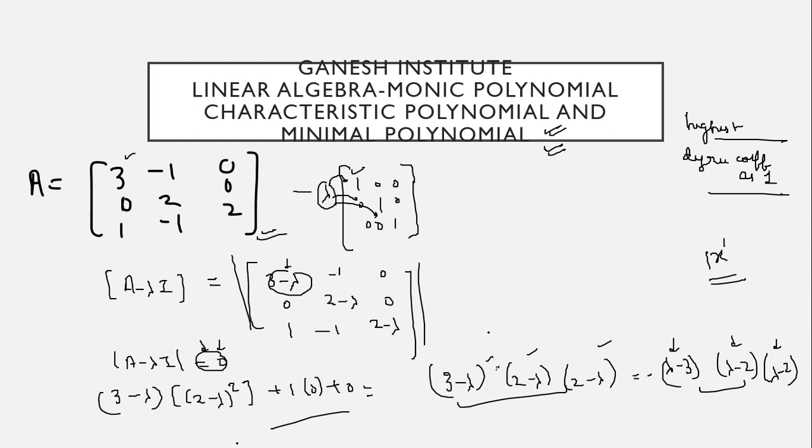So it might be the case that the polynomial which can be of smaller size from it, it can be lambda minus 3 lambda minus 2 because you can see this is the cubic polynomial, correct? So it can be either cubic or quadratic or linear but not more than that.